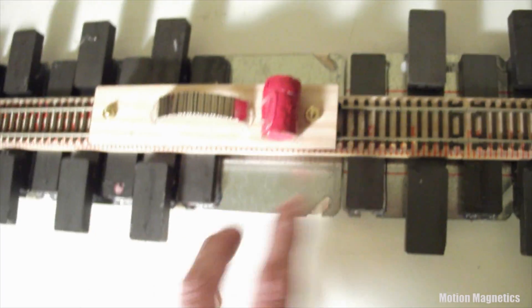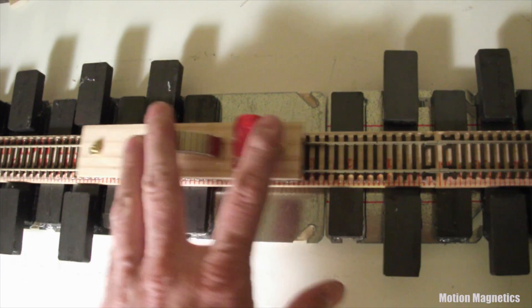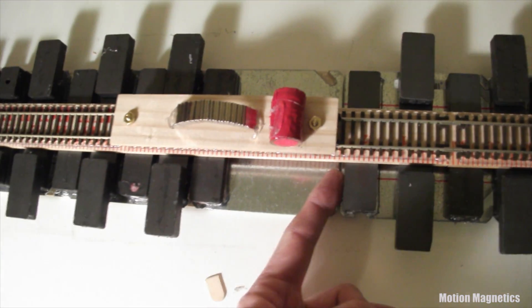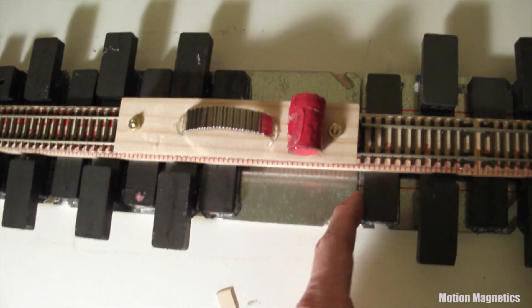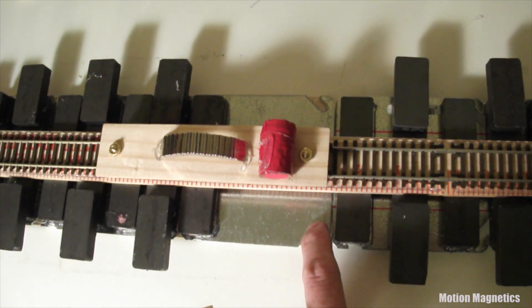When you have a space between the two tracks, it simply kicks the cart back because of the repulsion at the entrance of the next gate. If you add magnets between the two spaces here, all it does is wind down as it gets to the end of the track.